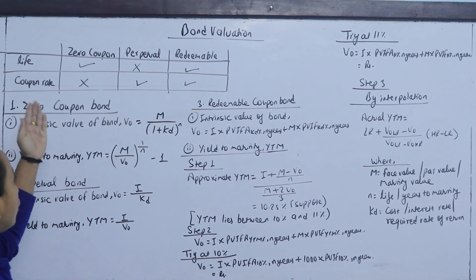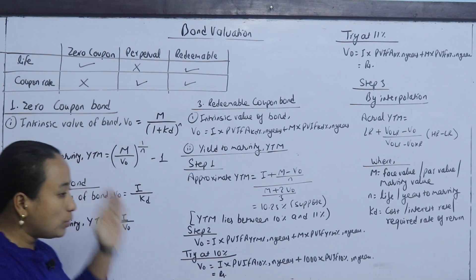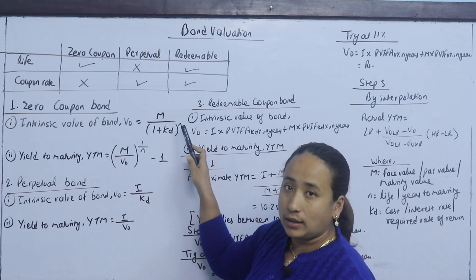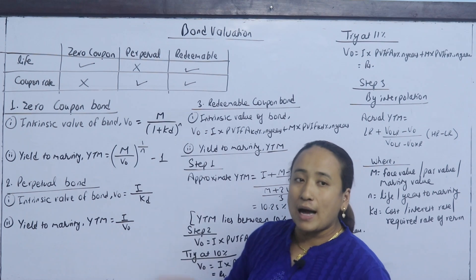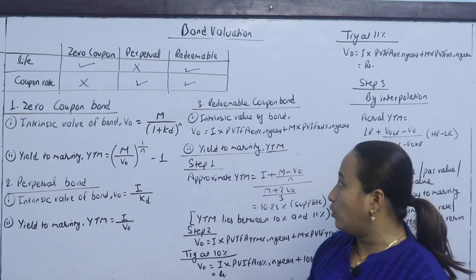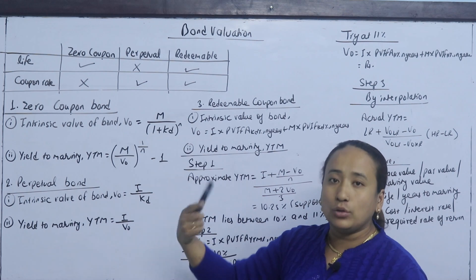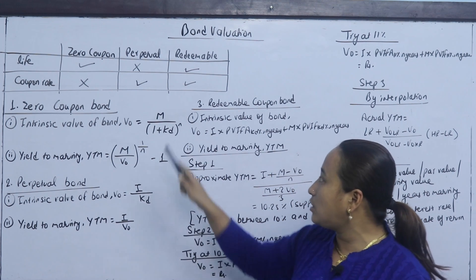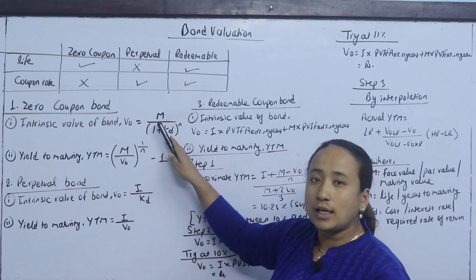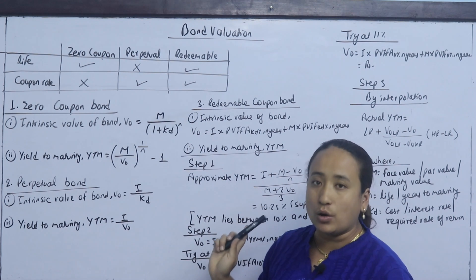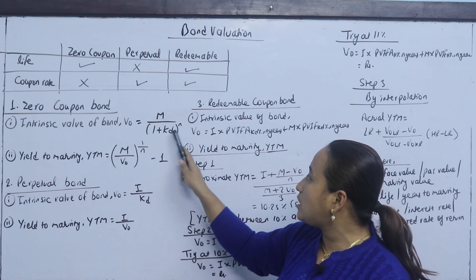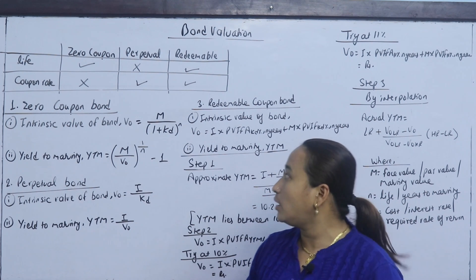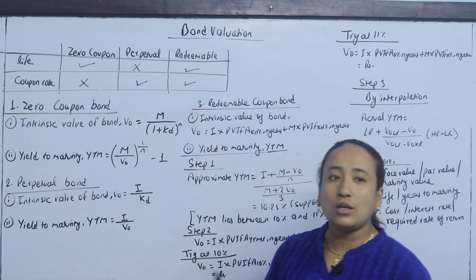First, we have the zero coupon bond. Its formula is: V0 equals M divided by (1 plus kd) to the power n. M is the par value, face value, or maturity value — normally the bond value is 1000. Kd means the interest rate or cost.